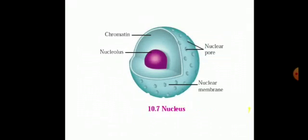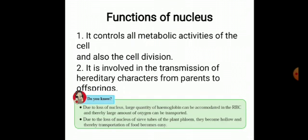You have to draw all these diagrams in your science copy. Functions of Nucleus: It controls all metabolic activities of the cell and also the cell division. It is involved in the transmission of hereditary characteristics from parents to offspring.